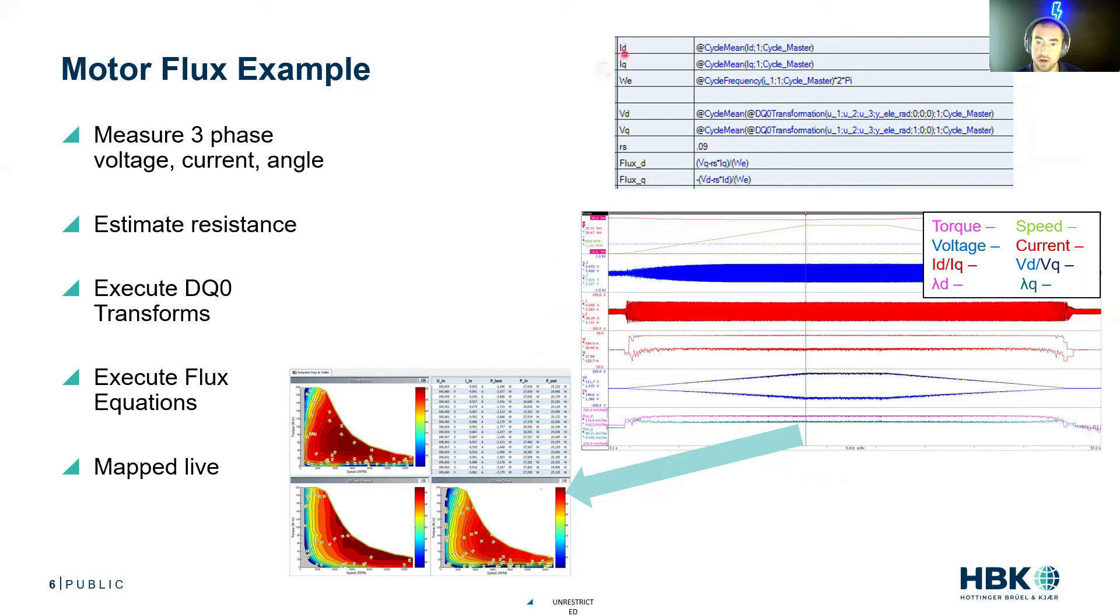Then we're taking those currents and we're executing our DQ zero equations on them. So we're calculating ID and IQ. We're calculating speed. We use this cool thing called cycle detect where we can track speed very dynamically.